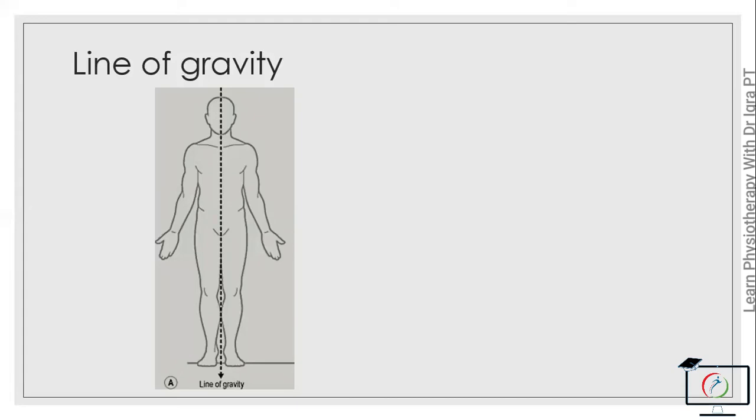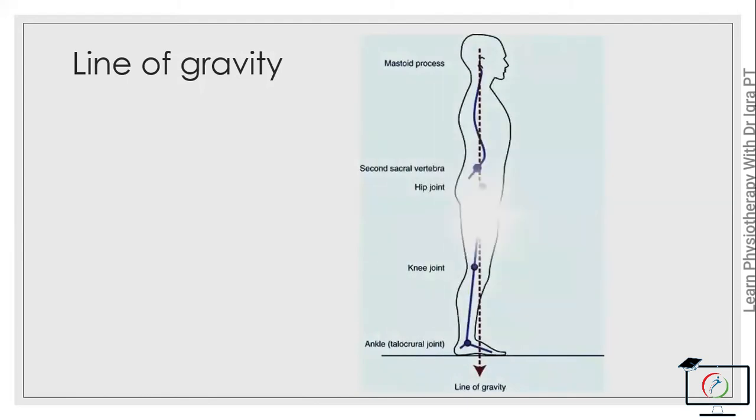In a good posture, the line of gravity passes through the mid cervical and mid lumbar vertebrae, and in front of the thoracic vertebrae. The external ear and the point of shoulder are in the same frontal plane and lie lateral to the line, and the central axis of the knee joint and the ankle joint are posterior lateral to the line.